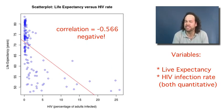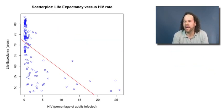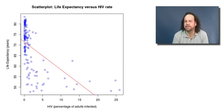This illustrates that, as we might have expected, when a country has more HIV infections as a percentage of adults, it probably tends to have a lower life expectancy too. We'll come back to these relationships later on.